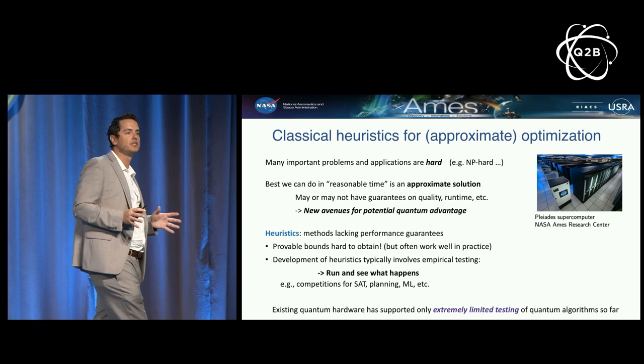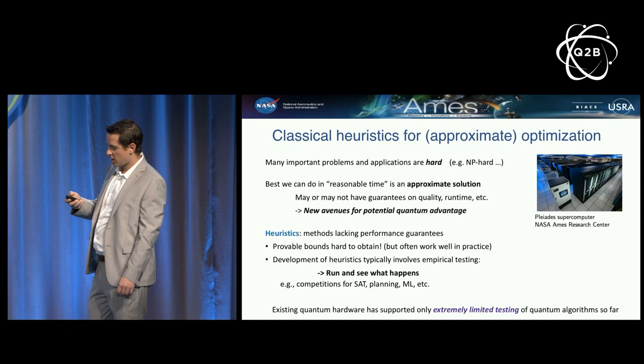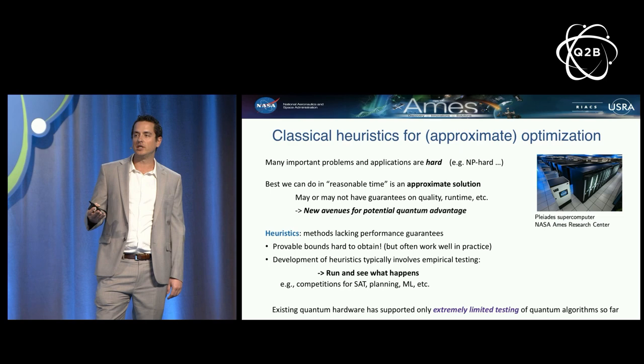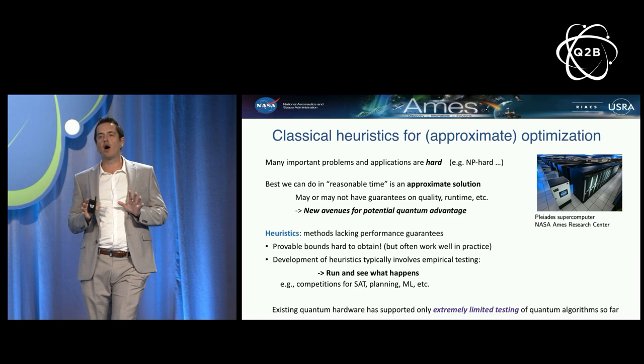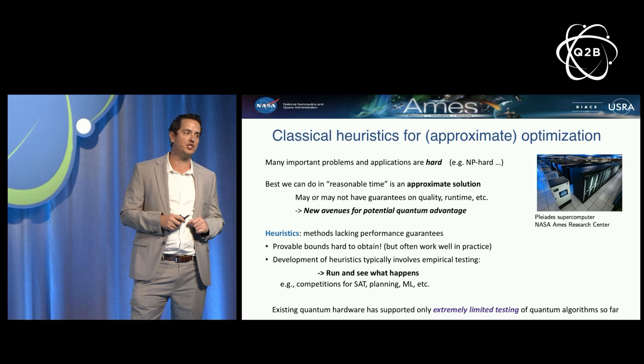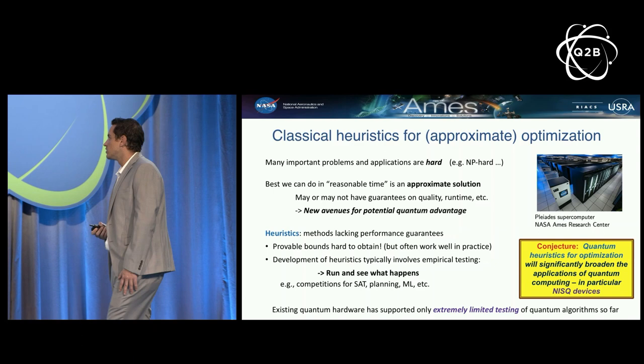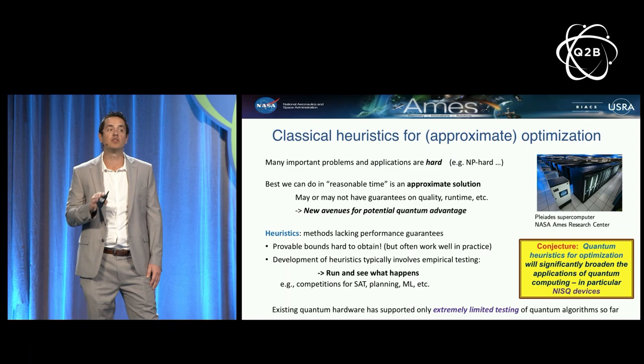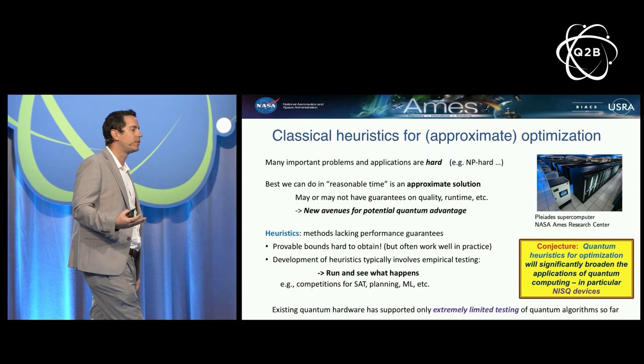We're very excited about the potential of heuristics and approximate optimization as a new avenue to put current and future quantum technology to use. So far we have D-Wave quantum annealers and small-scale circuit model machines available online and through certain hardware vendors. I want to emphasize that testing so far has been extremely limited — the jury is still out on how to best use these machines for optimization and how much we can really squeeze out of them. We conjecture in our group that quantum heuristics for optimization, especially over the next couple of years as 50- and 100-qubit machines become available, really have the potential to significantly broaden the applications of quantum computing.